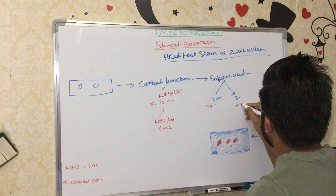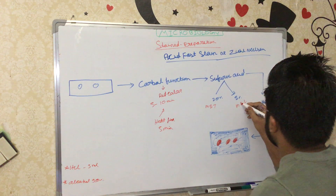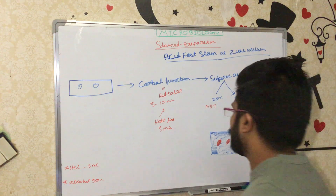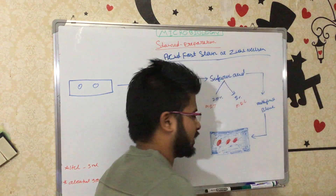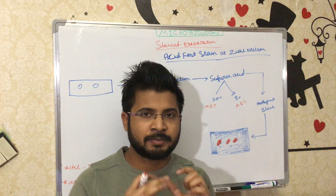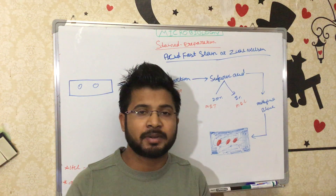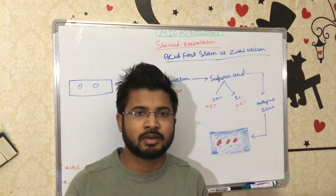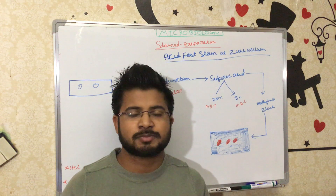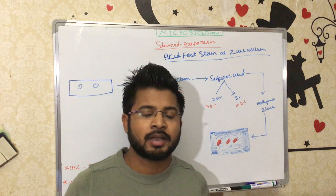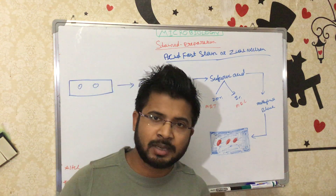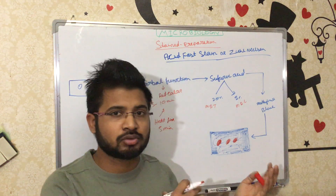We use 20% sulfuric acid for Mycobacterium tuberculosis, and 5% for Mycobacterium leprae. This is because, in gram staining, bacteria don't have much lipid. Gram-positive bacteria have only peptidoglycan and no lipid, while gram-negative bacteria have a lipid molecule but not as much as Mycobacterium tuberculosis.